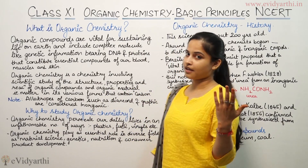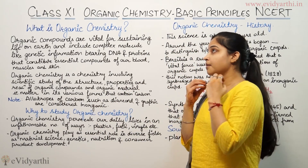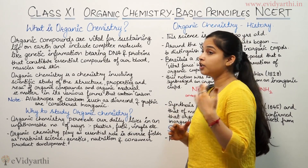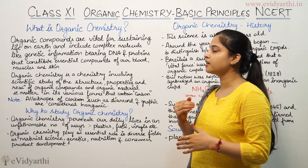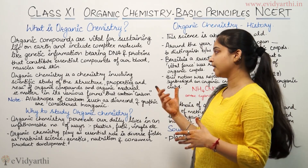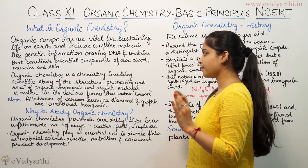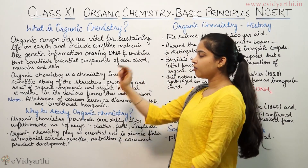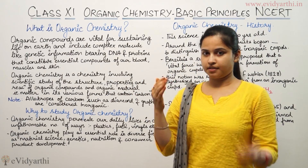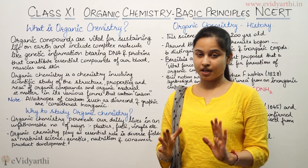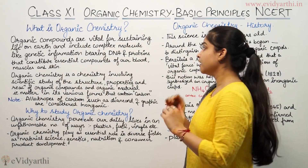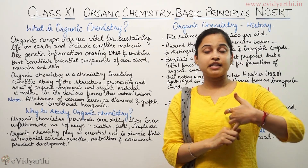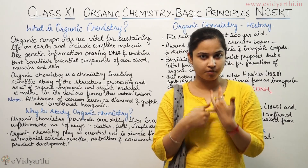So what basically is organic chemistry? Organic compounds are vital for sustaining life on earth and include complex molecules like genetic information-bearing DNA and proteins that constitute essential compounds of our blood, muscles and skin. This means that organic compounds are very important for human beings to sustain life on earth. For example, we can take the example of DNA and proteins — these two things are very much necessary for our human body.